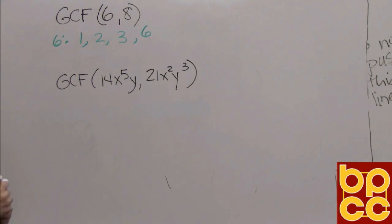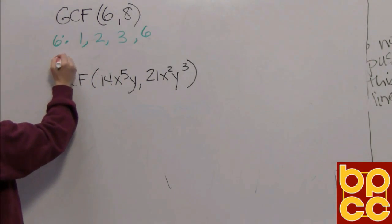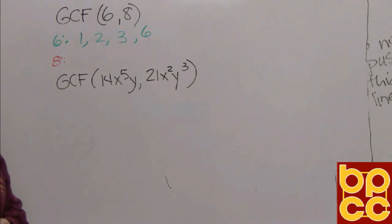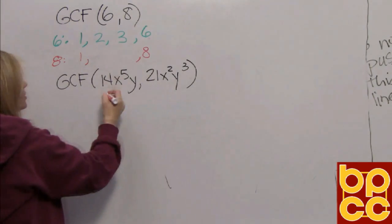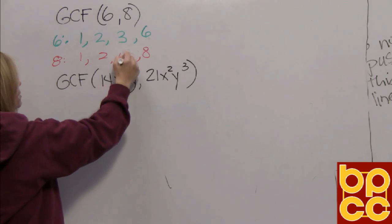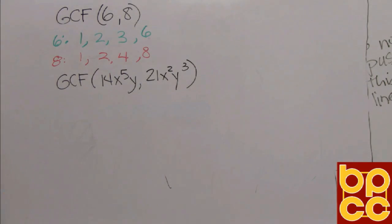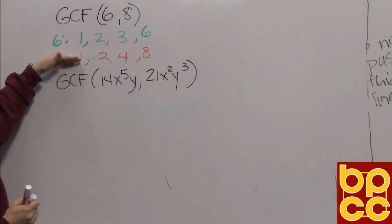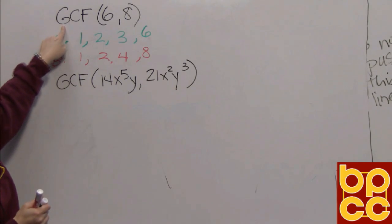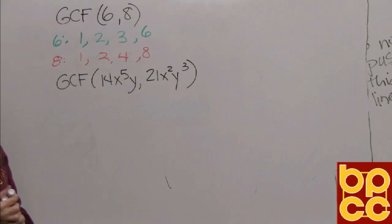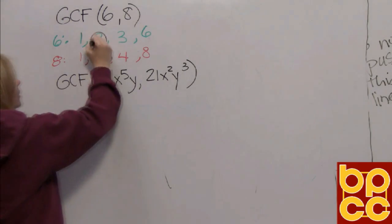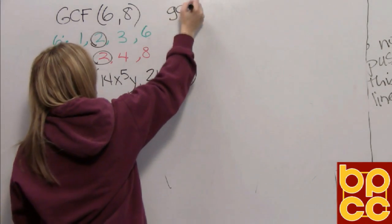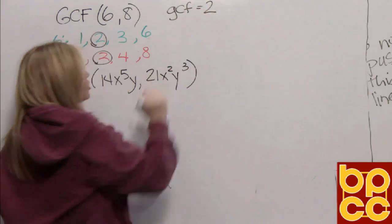Then you would do the same thing for 8 — you would list the factors of 8. What can multiply to 8? That can be 1 times 8, 2 times 4. What you then would do is look at both lists and find the largest common number. And it is obvious it is the number 2. So we would say the GCF of 6 and 8 is 2 — that is the biggest number you can divide both by.